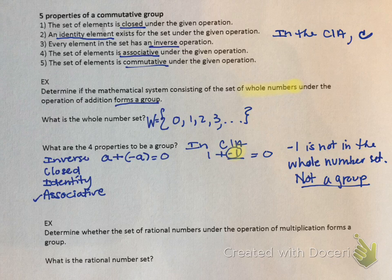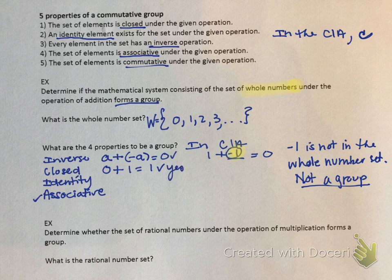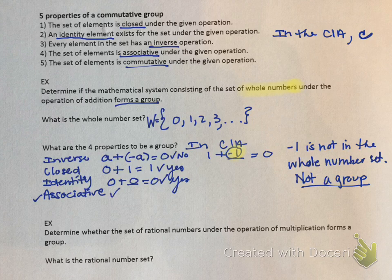Let's say you didn't catch that and checked closed first. Is it closed? If I add two numbers in this set, do I get a number in the set? 0 plus 1 equals 1, 1 plus 1 is 2, 2 plus 3 is 5 — all of them work, so yes. For identity, 0 plus 0 equals 0, so that works as well. Associative gets a check mark. The only one that fails is the inverse, because we do not have negative numbers in the whole number set. So it is not a group — it does not have an inverse that is in the whole number set.